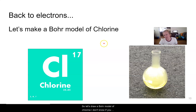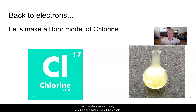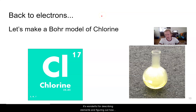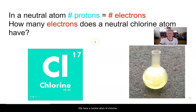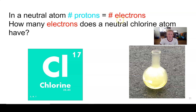Let's draw a Bohr model of chlorine. In the Bohr model, the central nucleus is kind of like the sun, and the electrons are rotating around it like planets. The Bohr model is not totally accurate, but it's wonderful for describing elements and figuring out how things are going to bond. So if we have a neutral atom of chlorine, the number of protons — the positive charges — should be equivalent to the number of electrons, the negative charges. That's what I mean by a neutral atom.